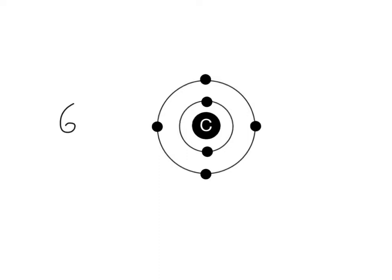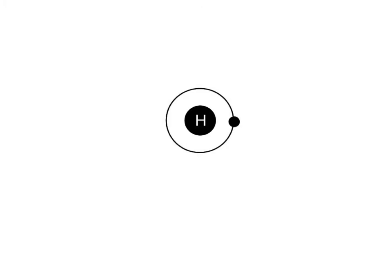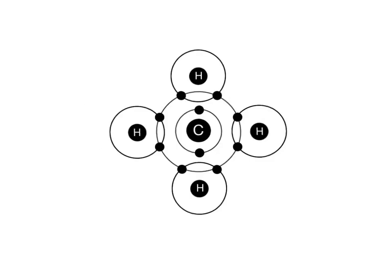An atom of carbon has six protons and six electrons. There are two electrons in its first electron shell and four electrons in its second shell, which is also its valence shell. Carbon can hold up to four more electrons in its valence shell for a maximum of eight. An atom of hydrogen has one proton and one electron. Its single electron is placed in its first and only electron shell, which is also its valence shell. Hydrogen can hold a maximum of two electrons in its first shell. In methane's four single covalent bonds, each hydrogen atom is able to share one pair of electrons with the carbon atom.